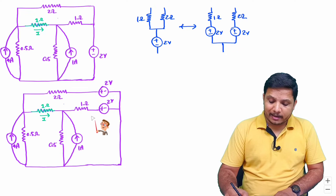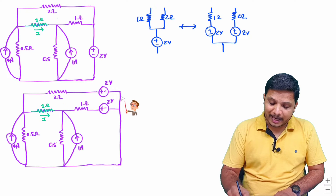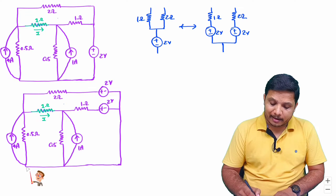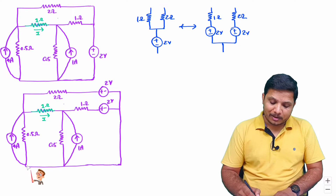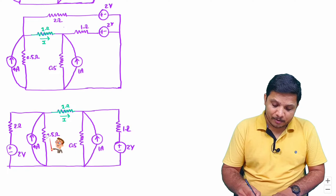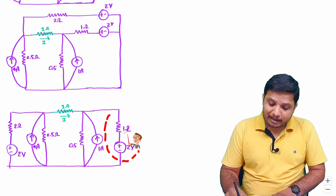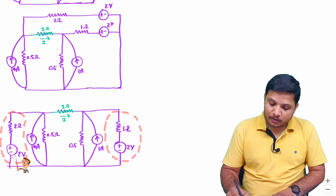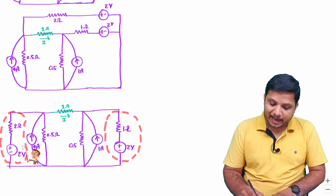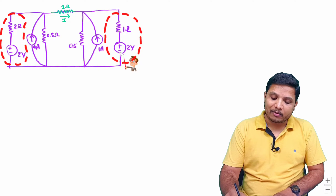Now if you observe this circuit, you can see the one ohm resistor is in series with this voltage source on one side, and the two ohm resistor is in series with this voltage source on the other side. After reconnecting, we get a slightly simplified version. Now I can convert this voltage source into a current source, and this voltage source into a current source, so that we can have an algebraic sum of current sources on each side.